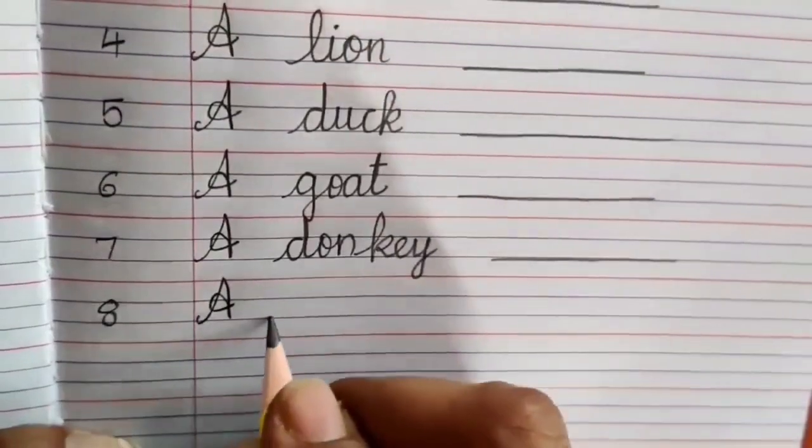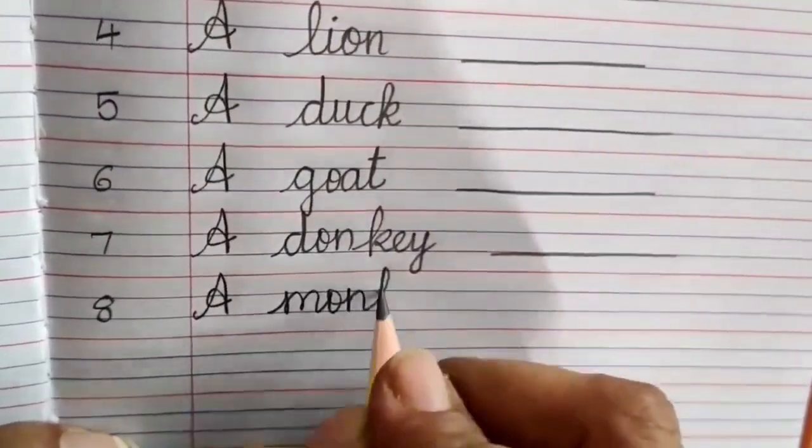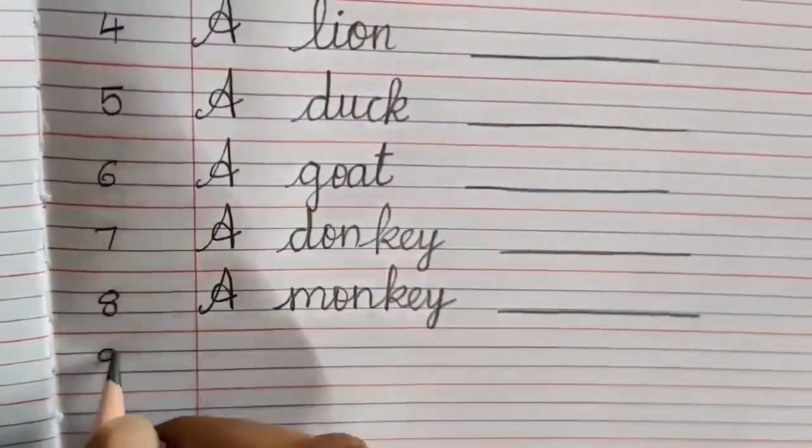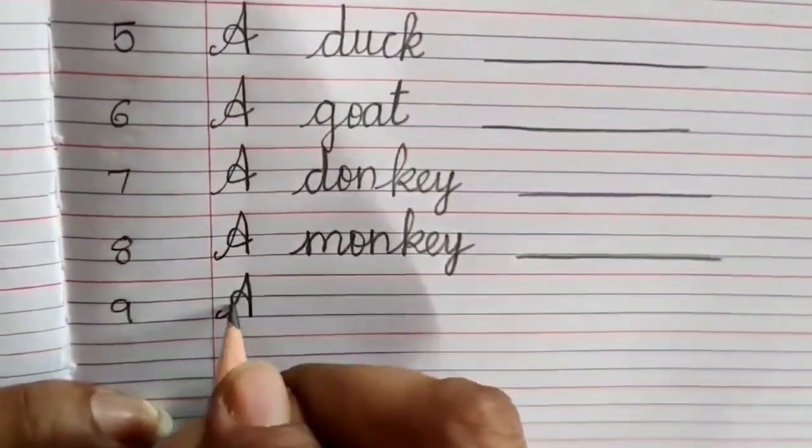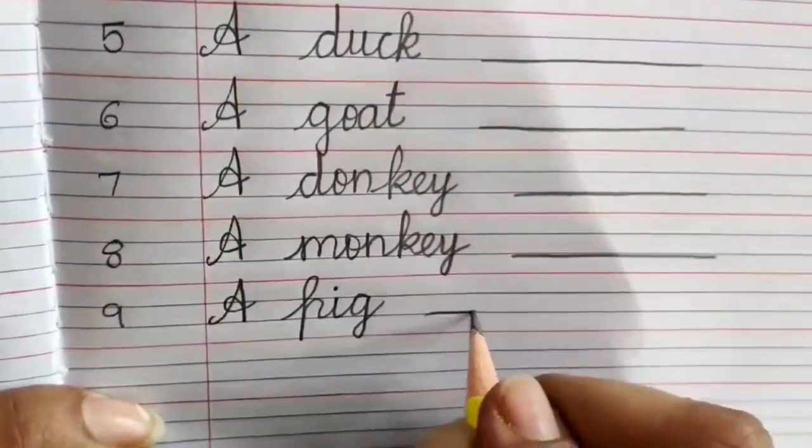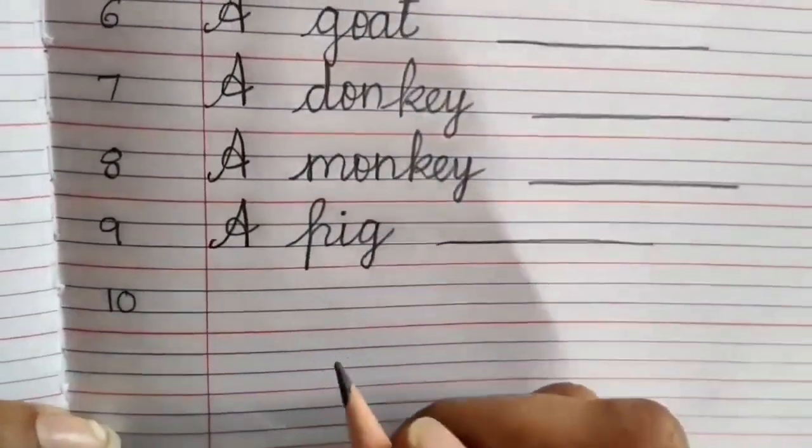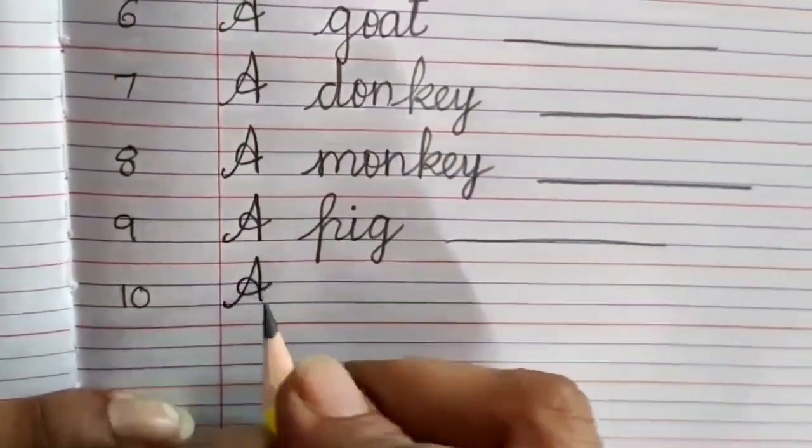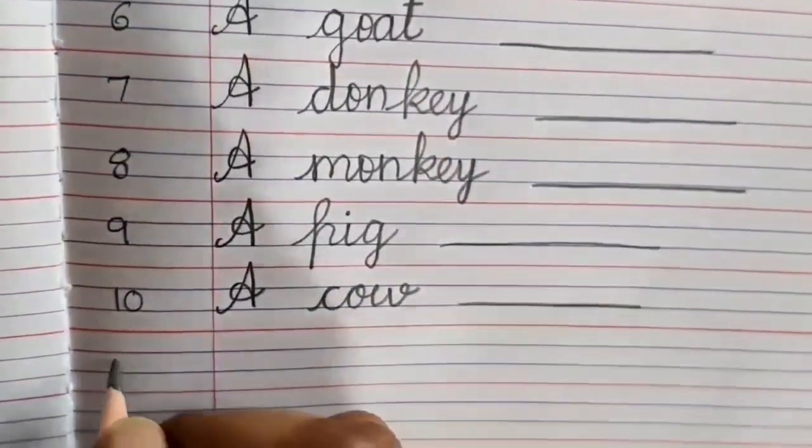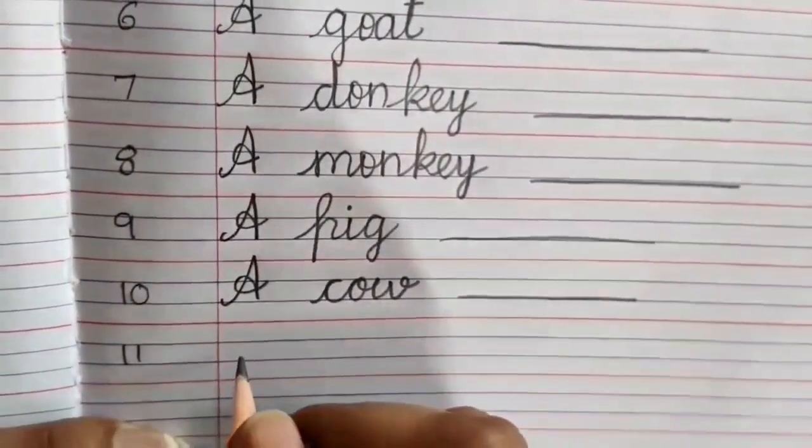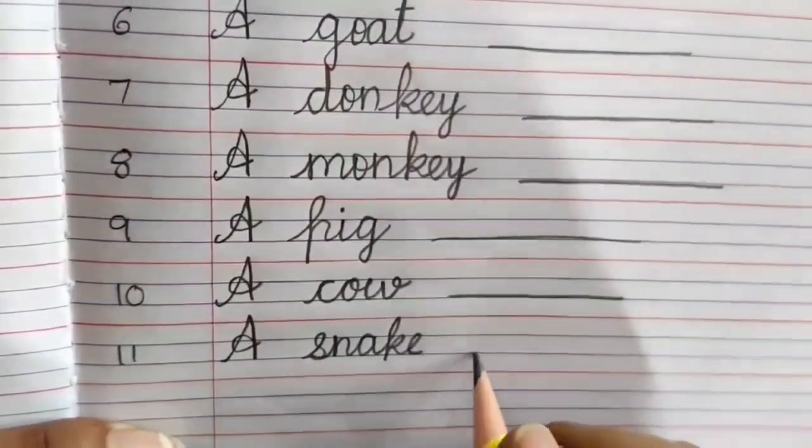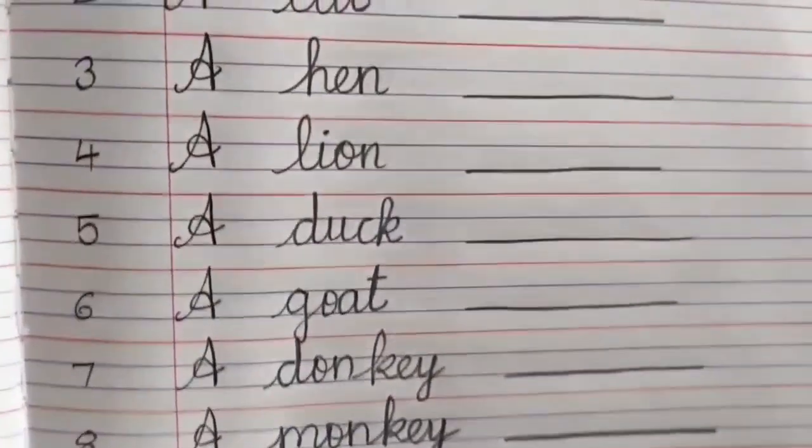Number 8 A M O N K E Y monkey dash. Number 9 A P I G pig dash. Number 10 A C O W cow dash. Number 11 A S N A K E snake dash. Now we will write answers.